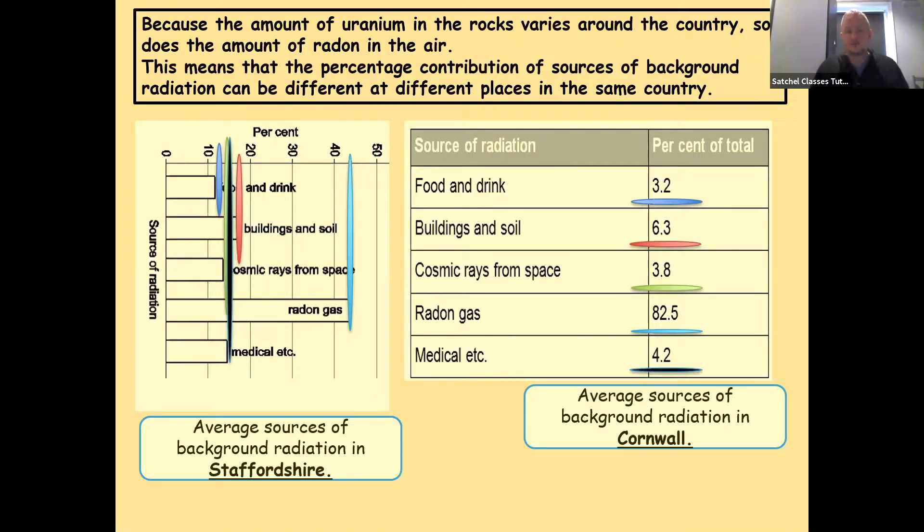Finally, medical. In Staffordshire, we're talking about 15%, whereas in Cornwall, 4.2. This could be explained by differences in the number of hospitals or the number of treatment centres for patients with cancer or the number of diagnostic centres that use radioactive tracers for diagnosis of disease, with more of them being present in Staffordshire and less in Cornwall. So these can be explained by different things about that particular area.